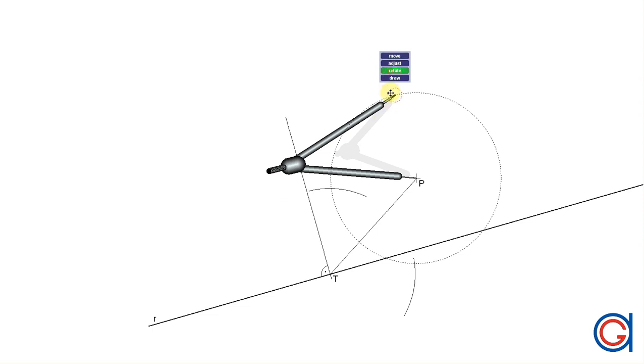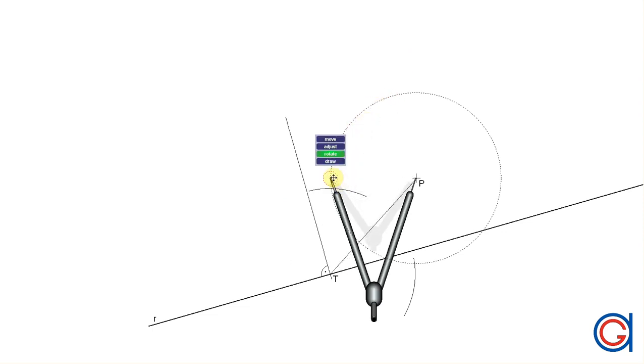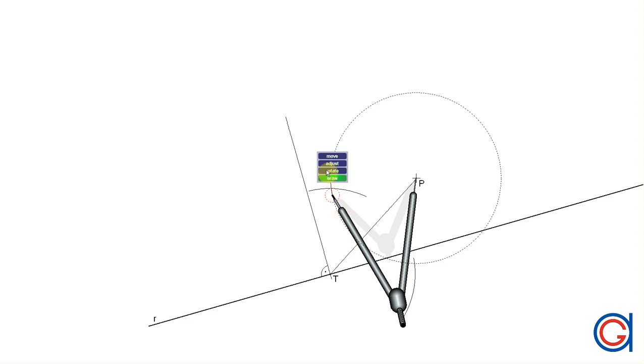And now with the same radius and setting the compass on point P, we're going to scribe two new arcs intersecting our previously drawn arcs, as shown here.